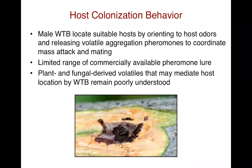I'll first talk about that first thrust regarding host colonization behavior. What we know about the host colonization behavior of the walnut twig beetle is that it likely locates suitable hosts by orienting to plant volatiles emanating from the branches of the walnut tree. Once males find a suitable host, they release a volatile pheromone that coordinates mass attack and mating.